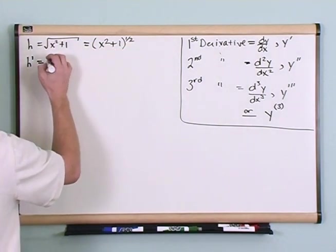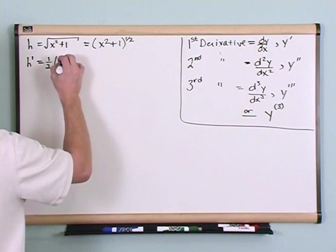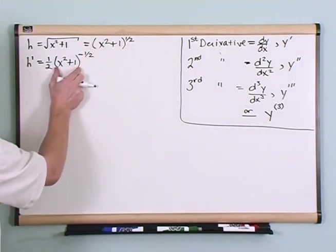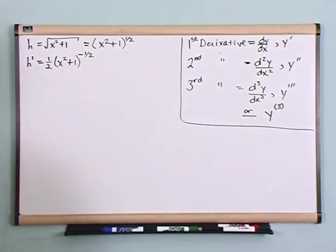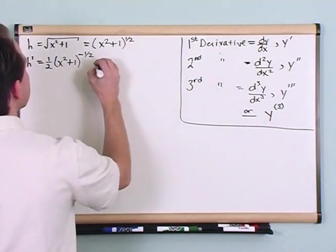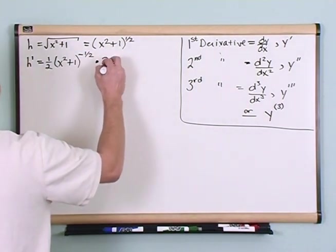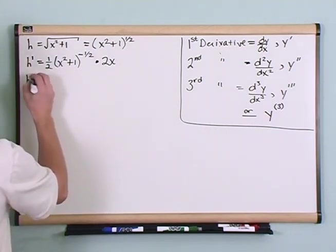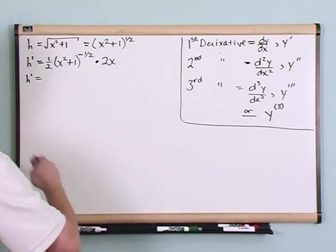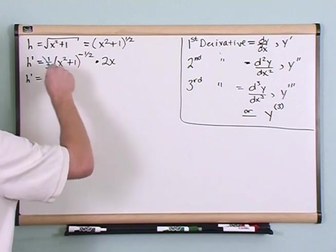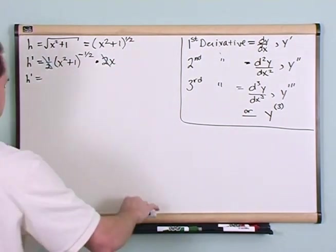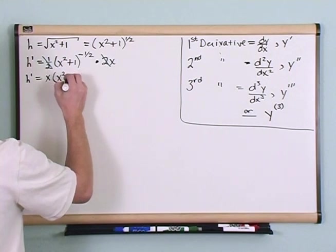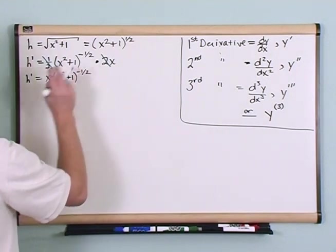We're taking something to the 1/2 power, so I'll use the power rule. I leave the inside alone, the exponent comes out as 1/2, the inside stays the same, and the exponent becomes 1/2 minus 1, which gives negative 1/2. But I'm not done — I've got to take the derivative of the inside, which is just 2x. So for h prime, the 1/2 cancels with that 2, leaving x times (x² + 1) to the negative 1/2. This is the first derivative.